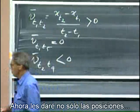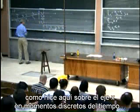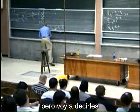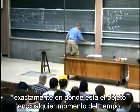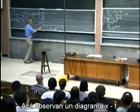Now, I will give you not only the positions as I did here on the x-axis at discrete moments in time, but I'm going to tell you exactly where the object is at any moment in time. Here, you see an x-t diagram.